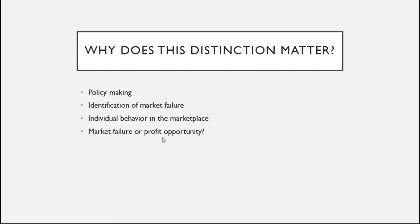The big reason this distinction is important: it helps us determine whether we are looking at a market failure — an opportunity for government to get involved and potentially make things better — or if there is a profit opportunity to be had, and thus the process of competition can come along and solve the issue without the need for heavy-handed government intervention. This distinction will permeate our lectures going forward, and in the next two videos we will focus on the two extremes of competition as a state of being: perfectly competitive markets and monopolies.